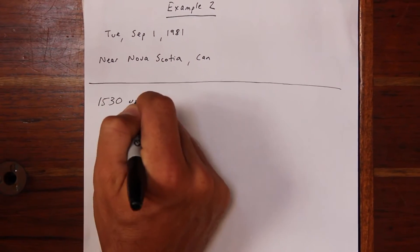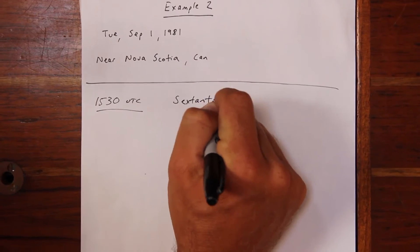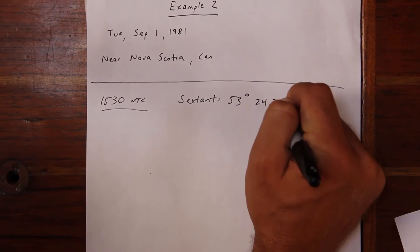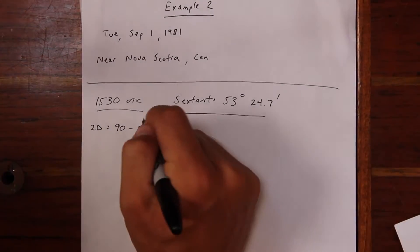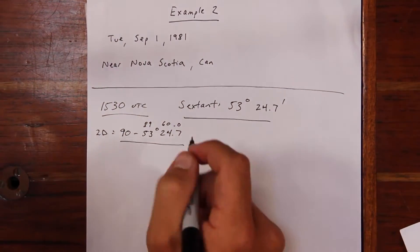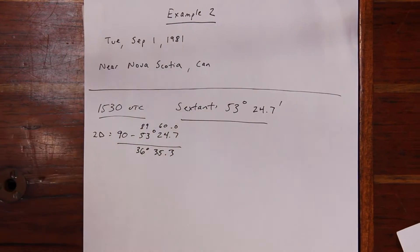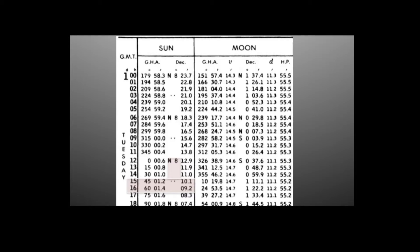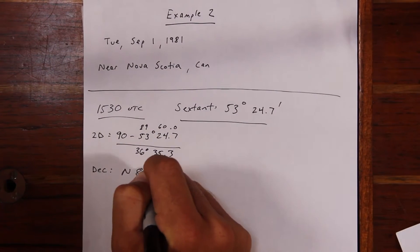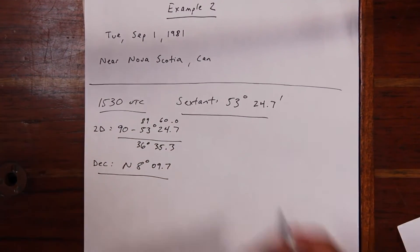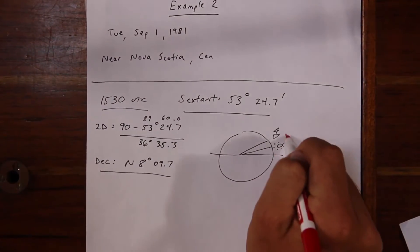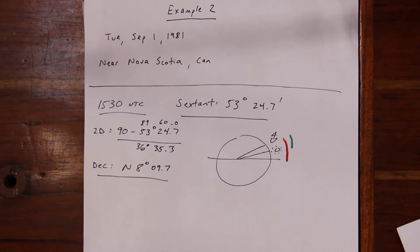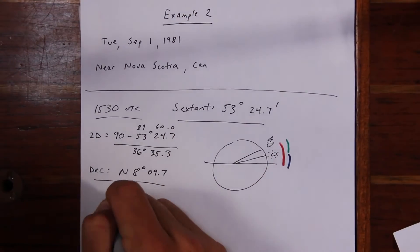In the second example problem, we're further north near Nova Scotia, Canada, and our time is 1530 UTC. Our sextant reads 53 degrees and 24.7 minutes. First, calculate zenith distance using the trick of 89°60', which yields 36 degrees and 35.3 minutes. Looking up our declination, we must interpolate between the hours of 1500 and 1600; our declination is North 8 degrees and 9.7 minutes. Drawing our picture, the Sun is in the same hemisphere but further south, so latitude equals zenith distance plus declination.